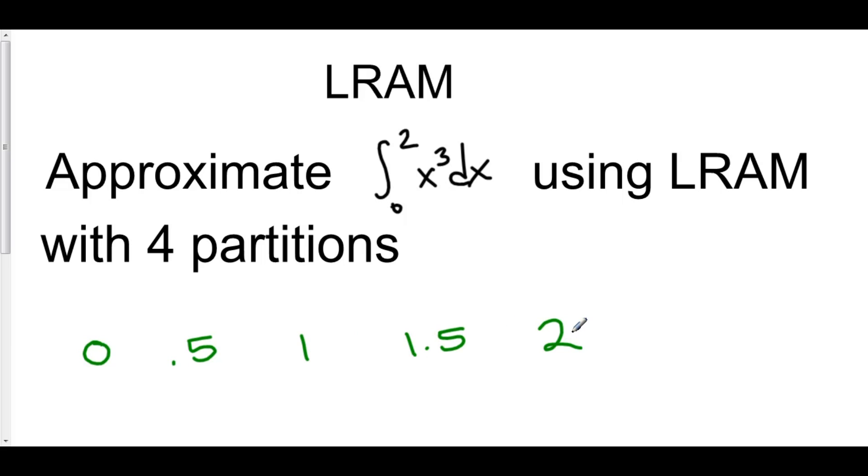We can start to actually visualize what this thing is going to look like, at least what our graph is going to look like. Well, we're using a left Riemann approximation, which means that when I draw my rectangles, I'm drawing my rectangles from the left-hand side. So x equals 0 is going to go up to f of 0, so that will be the first height of the first rectangle.